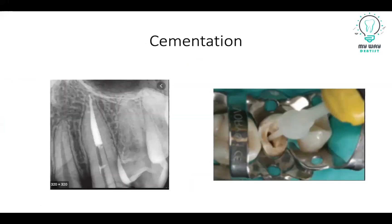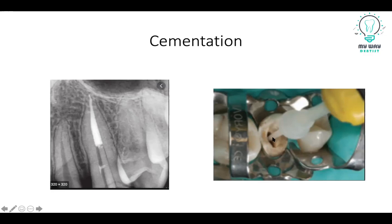After doing the enlargement for the post space, you will take a radiograph to make sure the post is reaching the full length until the apical seal. We need to emphasize that this radiograph shown is just an example and is not perfect. After making sure your post is reaching the full length, you will remove the post and clean the canal. It's very important to make the canal dry before putting the cement. You will put the tip of the cement inside the canal going back until you reach the orifice, then put your post and do the light curing.